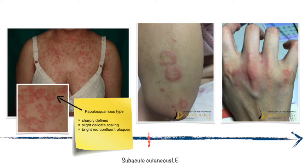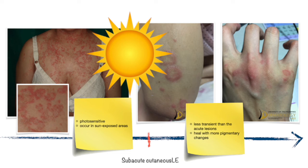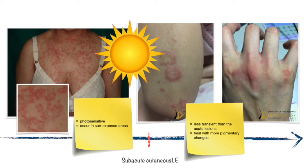Second is the annular type, which presents as bright red-brown lesions with central regression and little scaling. SCLE lesions are photosensitive and occur in predominantly sun-exposed areas. They tend to be less transient than ACLE lesions and heal with more pigmentary change.